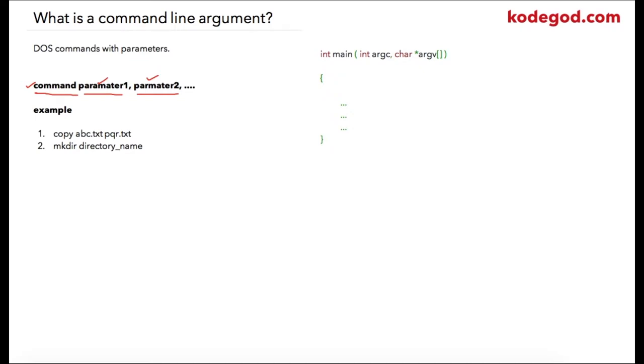From DOS prompt you can specify your exe name and pass your parameters. A few examples of command line arguments are copy command and mkdir command. So while using copy command, I am writing two parameters abcdxt and pqrtxt.